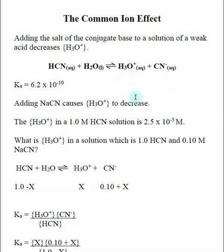If we do the basic calculation where we start with a 1.0 molar solution of HCN, we can calculate that the concentration of hydronium is 2.5 times 10 to the minus 5.